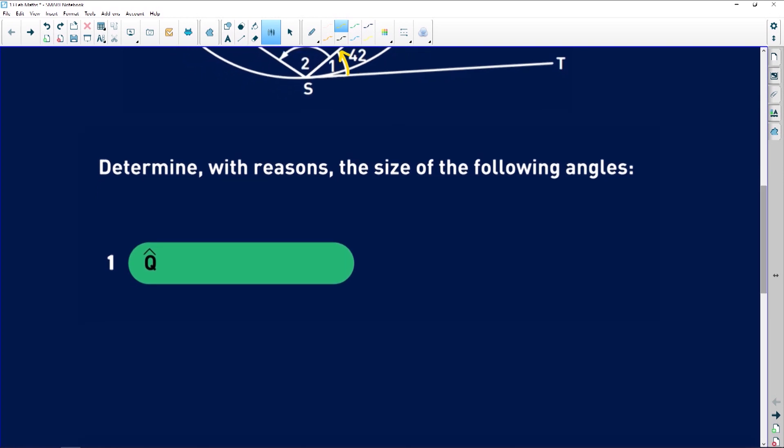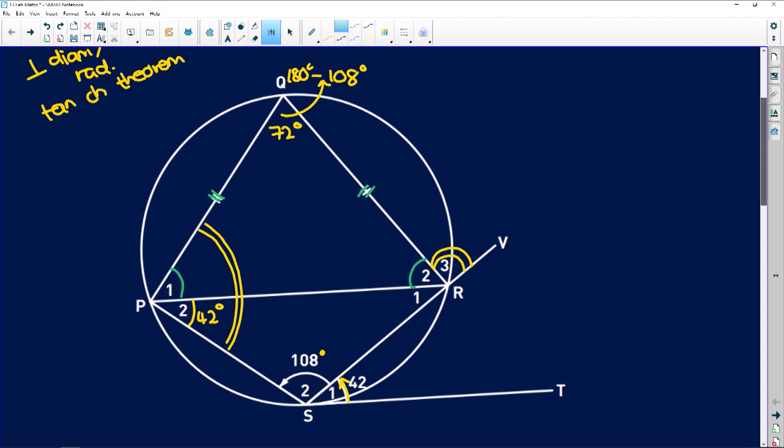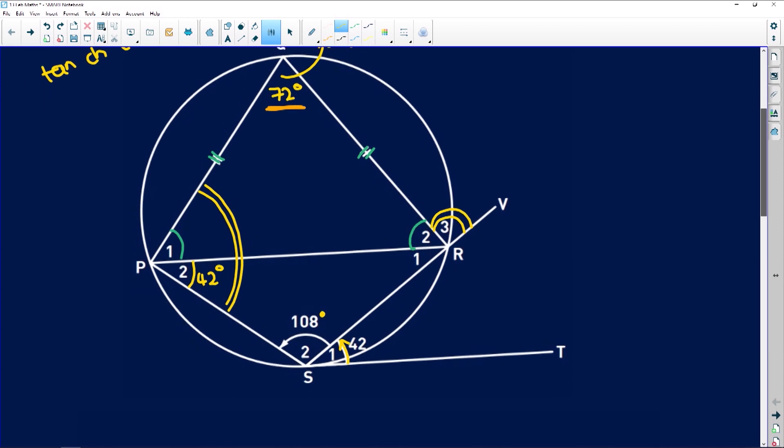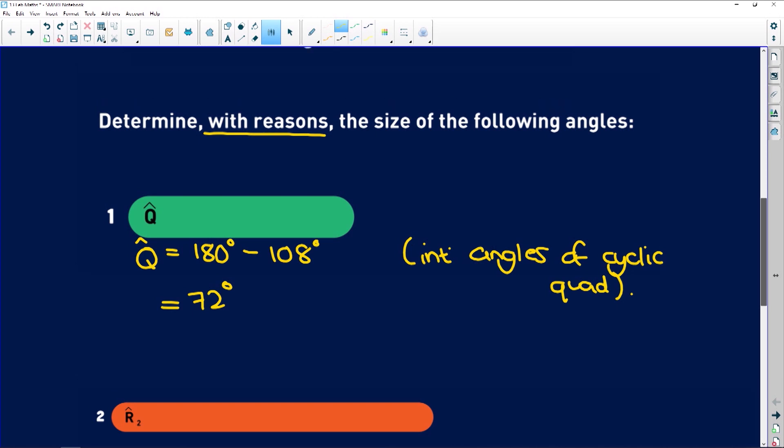It says, determine with reasons. Very important. Guys, you lose marks if you don't give reasons. The size of the following angle. So, angle Q. So, let's take a look. Well, if you've done what I did, you've already found out that angle Q2 is equal to 72 degrees. You can even say angle Q is equal to 180 degrees minus 108 degrees. Interior angles of a cyclic quad because those angles are supplementary. So, that means that angle Q is 72 degrees. Okay. Easy peasy.